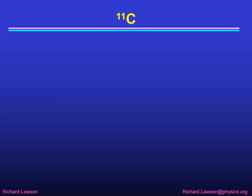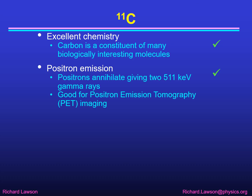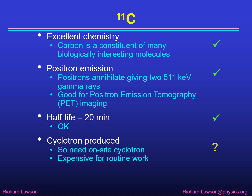Carbon-11 is a radionuclide with excellent chemistry because carbon is a constituent of many biologically interesting molecules, so it's very easy to label things with carbon. It decays by positron emission, and the positrons then stop and annihilate with electrons giving two 511 keV gamma rays, which is good for positron emission tomography using PET scanners. It has a half-life of 20 minutes, which is acceptable as long as you can get it into the patient quickly. It's cyclotron produced, so with a half-life of 20 minutes you have to have an on-site cyclotron — making it expensive and limiting it mostly to research use.